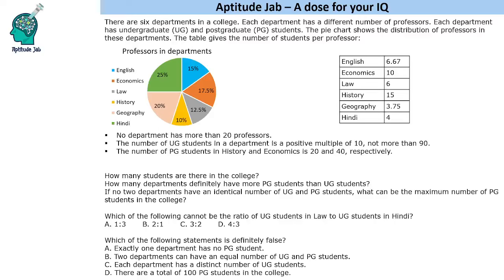Hello everyone, welcome to Aptitude Jab. This is a set based on a pie chart. It says that there are six departments in a college. Each department has a different number of professors, and each department has undergraduate and postgraduate students. The pie chart gives the distribution of professors in these departments, and the table gives the number of students per professor. Based on this, we need to answer the questions.